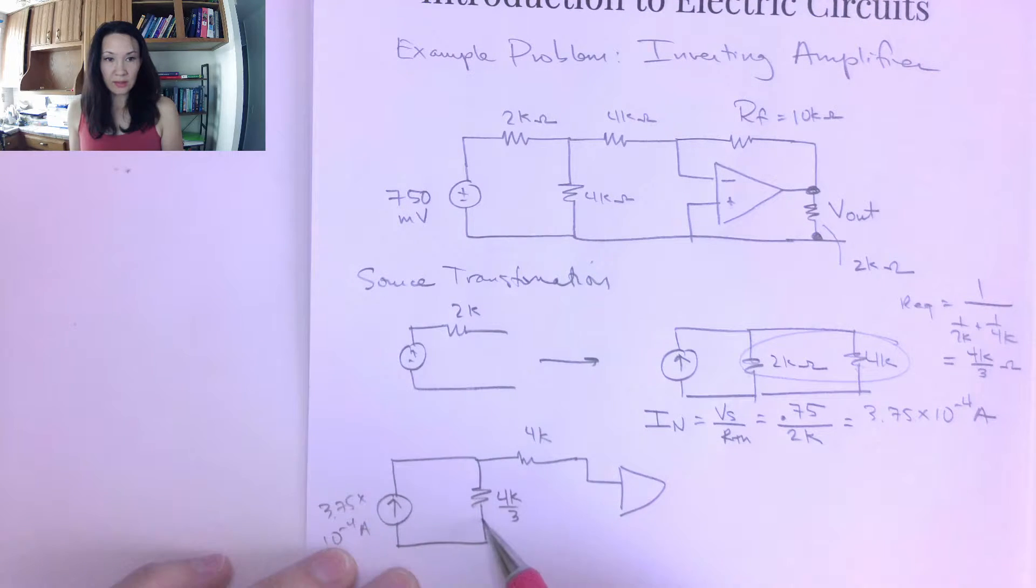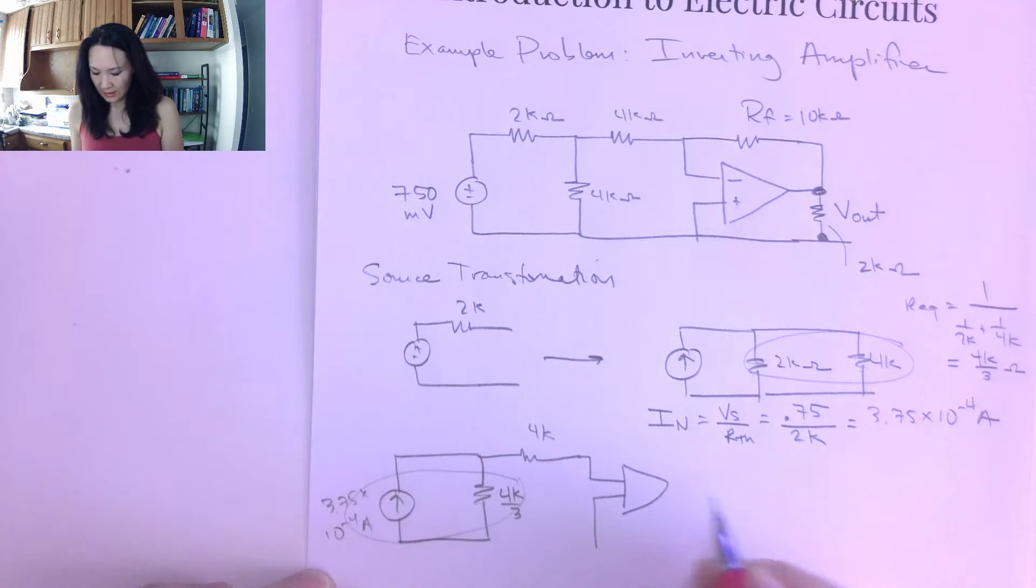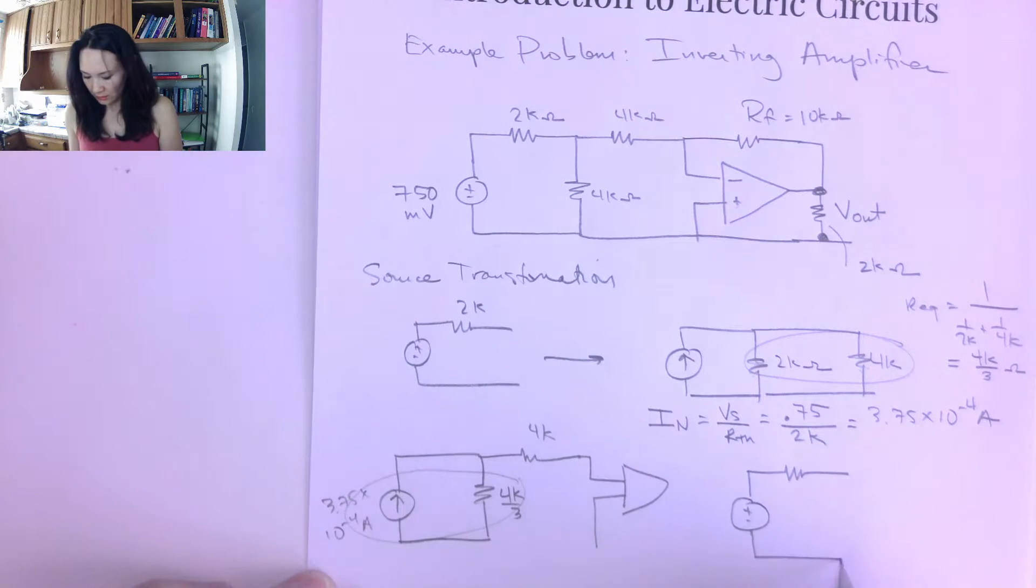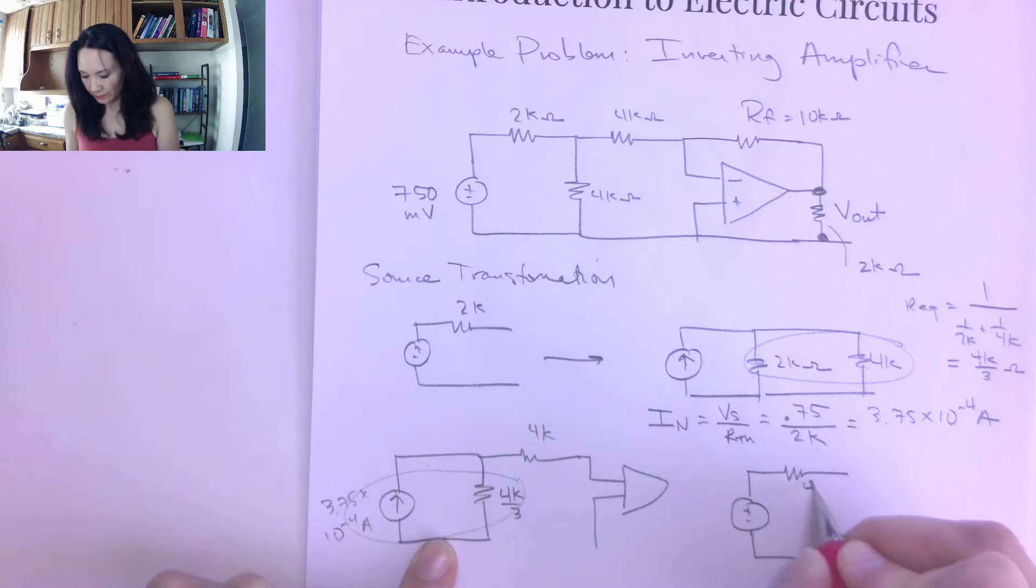So I want to do a simplification of these ones here. So I can do another source transformation. So this thing here, I can replace with a voltage source in series with that resistor. And the reason why I want to do that is because I basically am popping this resistor back up to this top line. So now that resistor will be in series with that, and I just simply add them together.